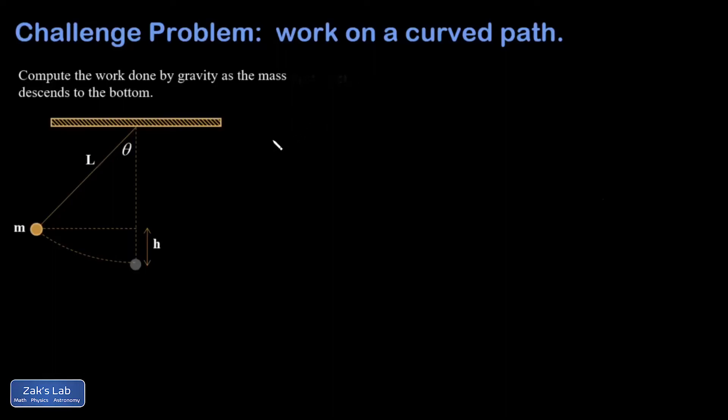In this challenge problem, we're computing the work done by gravity as this simple pendulum bob descends through a height of h. If you know about conservation of energy already, then you know there's a workaround to this that makes it so we don't have to use any calculus. And it's the whole point of energy methods is that they simplify your life a lot. But for now, we're trying to do a direct calculation of the work.